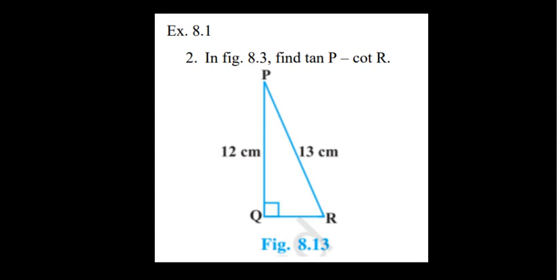The question is, in Figure 8.3, find tan P minus cot R. So this is the figure given to us. We can see PQ is equal to 12 cm, PR is equal to 13 cm, and Q is the right angle.